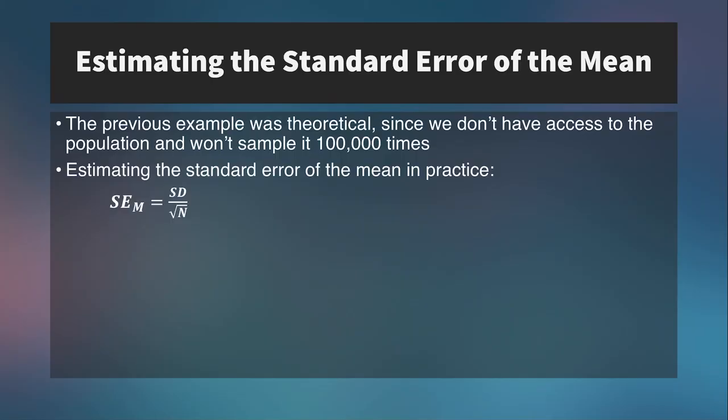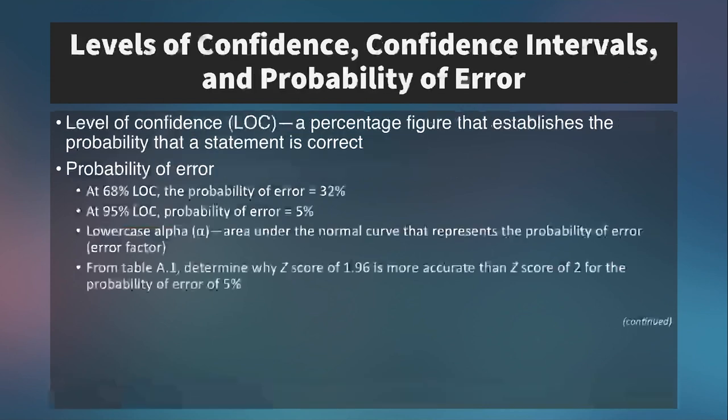But how did we calculate that? This theoretical thought experiment doesn't actually exist — we can't pull a sample 100,000 times. So we need a way to calculate standard error of the mean. In order to estimate SEM, we use this equation: standard error of the mean equals the standard deviation of the sample over the square root of the sample size. We can use this number to then calculate levels of confidence, confidence intervals, and probability of error.